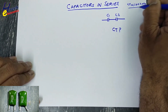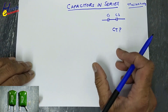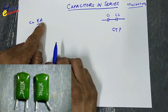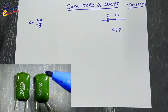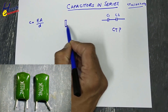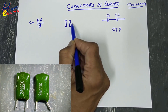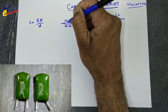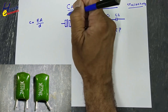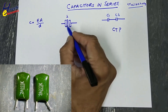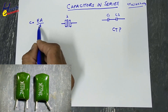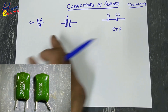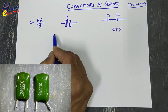The total capacitance will be added, but here the scenario is different. Capacitance of a capacitor depends on three things: first, the area of the plates — that is plate size in square meters; second, the distance between the two plates; and third, the permittivity of the dielectric. These three things create capacitance.